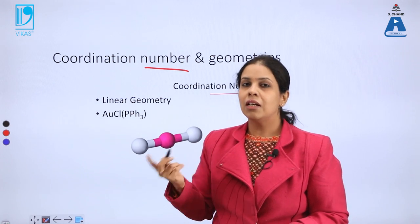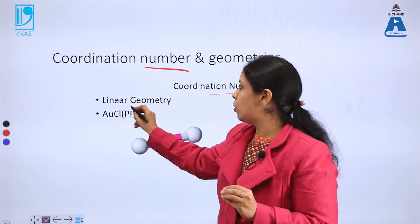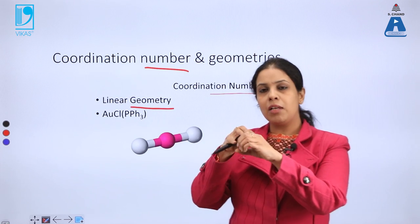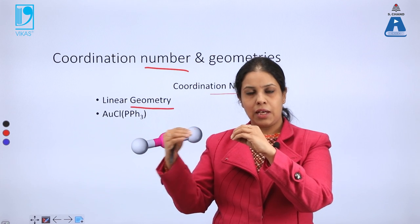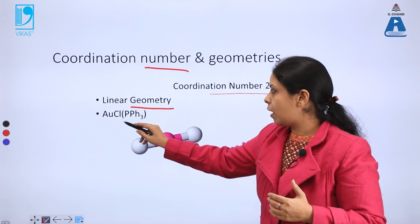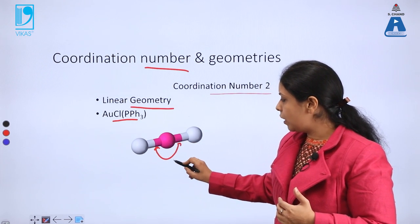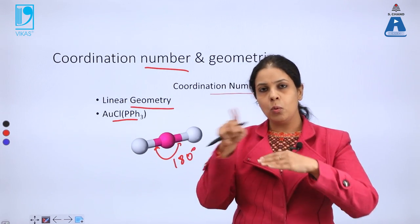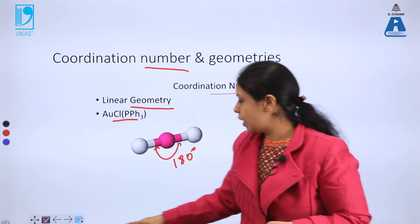Coordination number 2 is the lowest coordination number possible. The geometry here is linear. The central element has one ligand attached on one side and one on the other side, and the angle between them is 180 degrees. That is why coordination number 2 gives linear geometry.